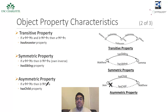Symmetric properties state that if A is linked with B using such a property, then B should also be linked with A using the same property. The adjacent figure demonstrates the symmetric property has sibling. Asymmetric property carries inverse meanings compared to the symmetric property. If a property P is asymmetric and relates individual A to individual B, then individual B cannot be related to A via the same property P. The figure here shows an example of an asymmetric property has child. If the individual Gene is related to the individual Matthew via the has child property, then it can be inferred that Matthew is not related to Gene via the has child property.